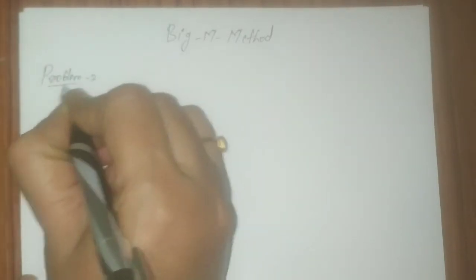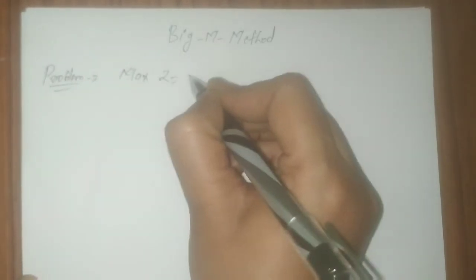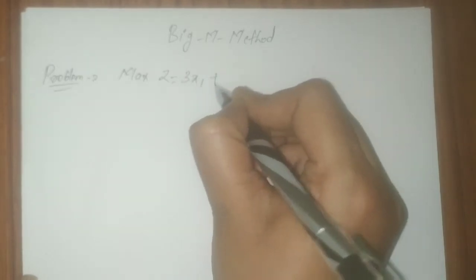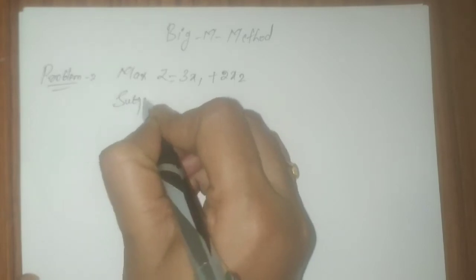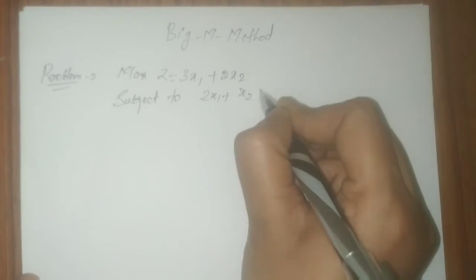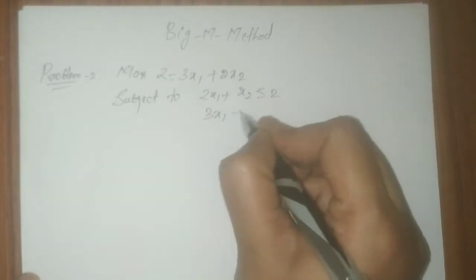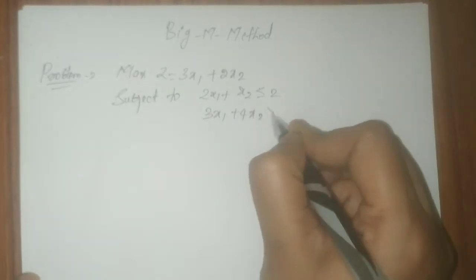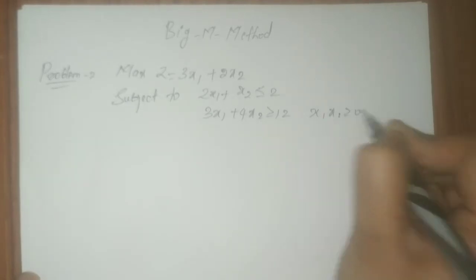Here we have problem number two, where I have considered a maximization type. So it is: max Z equals 3x1 plus 2x2, subjected to 2x1 plus x2 less than or equal to 2, and 3x1 plus 4x2 greater than or equal to 12. We have x1 and x2 greater than or equal to 0.